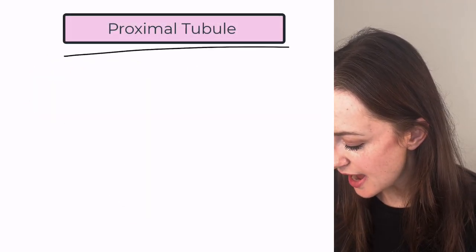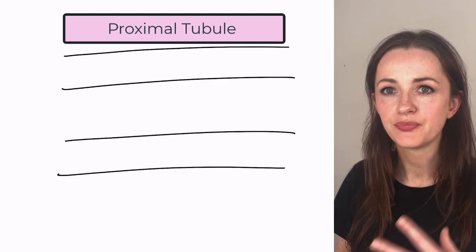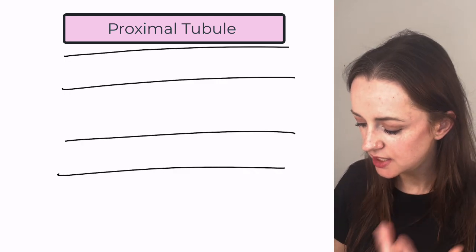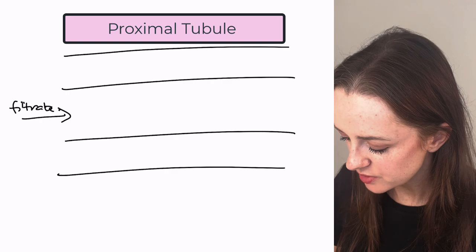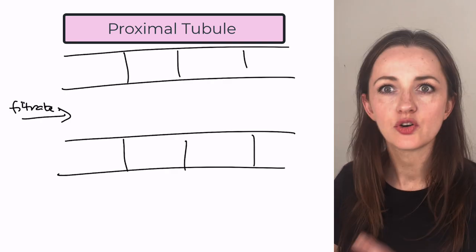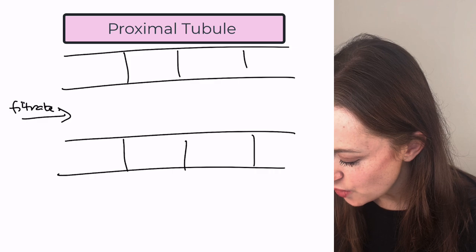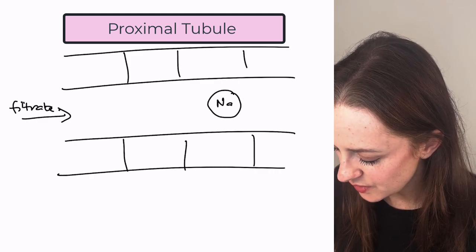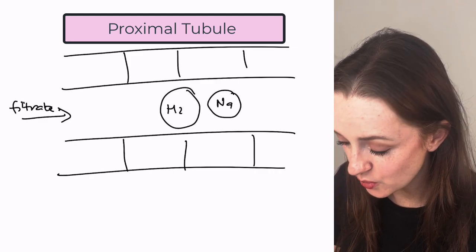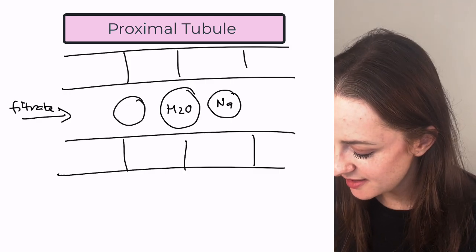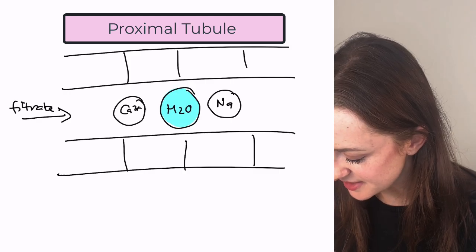If we just look at the proximal tubule and we've got our plasma coming in here in our filtrate. So in here we've got a lot of things going on but we're just going to pick out a few important ones which are sodium, water and of course because we're talking about this today, calcium. Let's color them in because it's more fun.